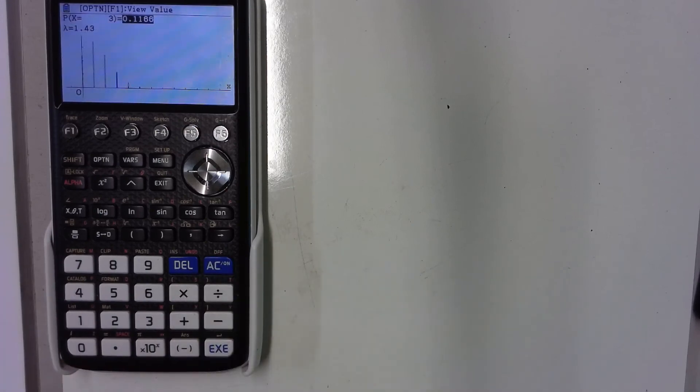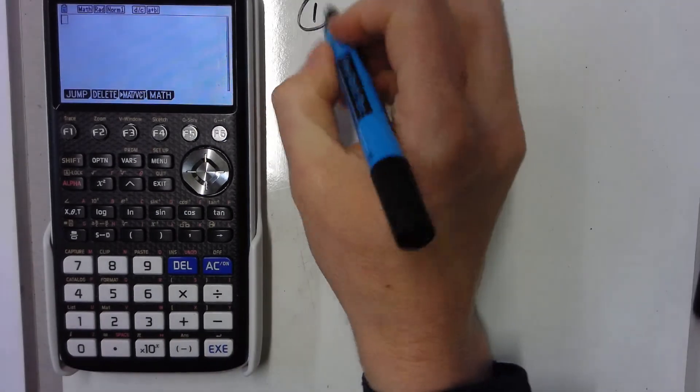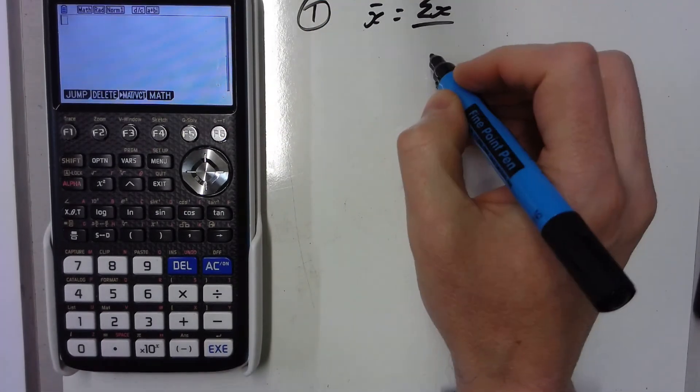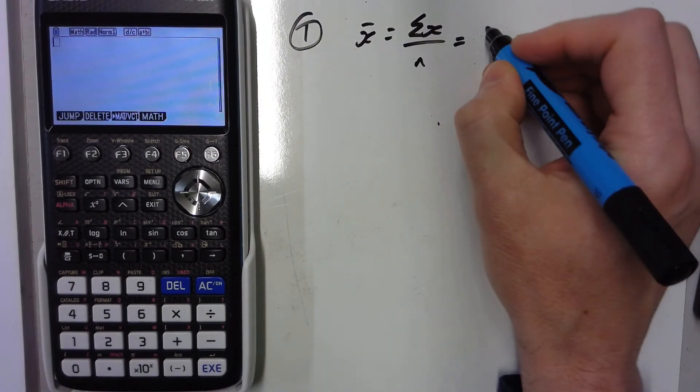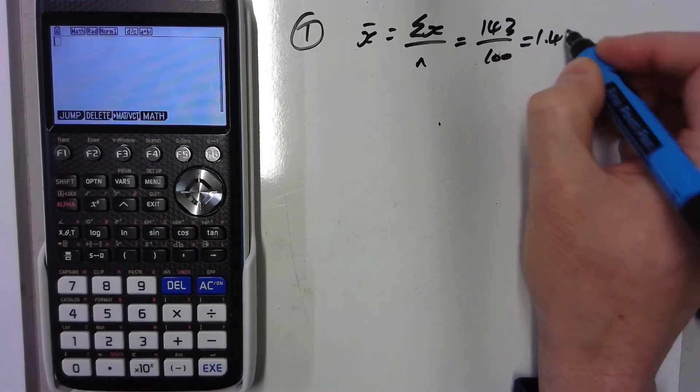The first question from exercise 2e just asks us to find out what the mean is. So number 1 here, the mean. The formula for the mean is add up all the x's and divide by how many there are. So we've got 143 divided by 100, so we've got a mean of 1.43.